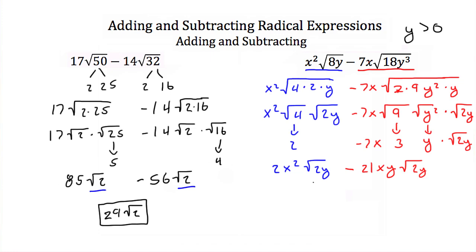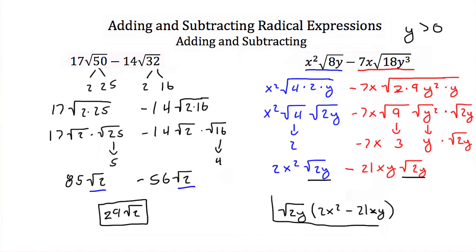Notice we now have like radicals — the square root of 2y in both terms. Factoring out the square root of 2y, what we have left is 2x squared minus 21xy, all times the square root of 2y. This is our simplified solution.